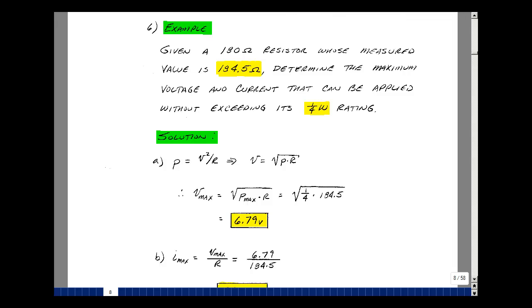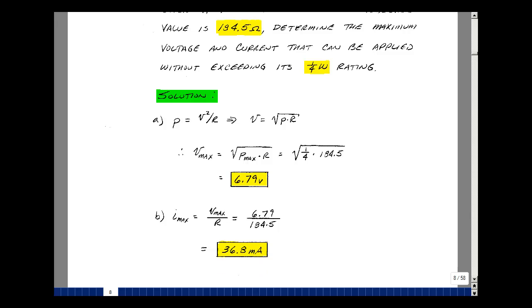You could also look at it in terms of the current that's available. We could take the second form of Ohm's Law and calculate the current as the voltage divided by the resistance. And since the resistance is fixed, then the maximum current occurs when the maximum voltage occurs. That would be 36.8 milliamps.